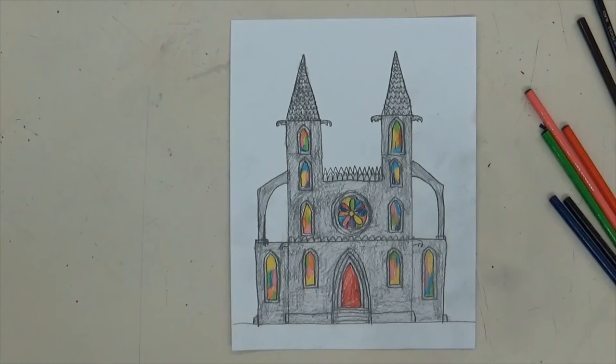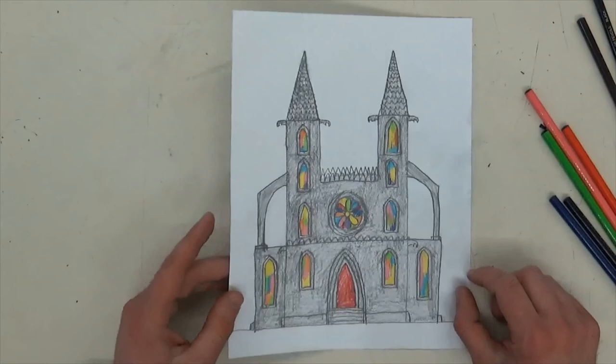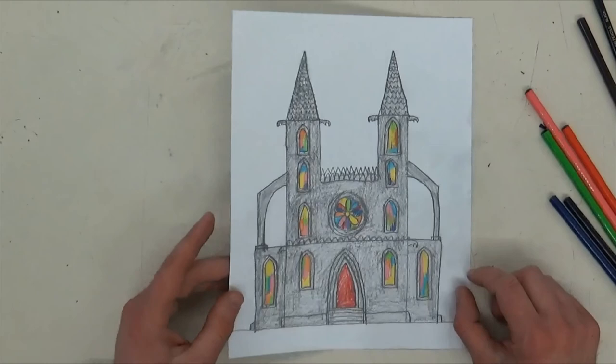You don't have to color or shade in your drawing, but that's something you can do if you want to add stuff. I just think it makes it look cool. Anyway, that's a Gothic cathedral. Just put some of the parts in. Work hard, have fun.